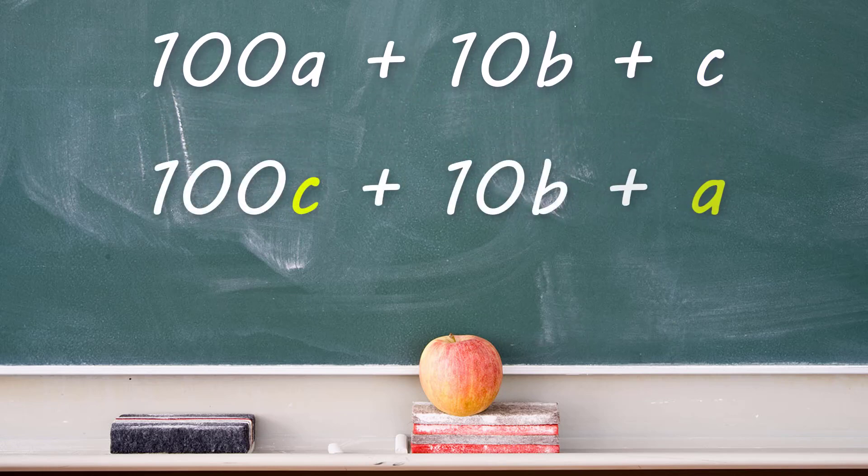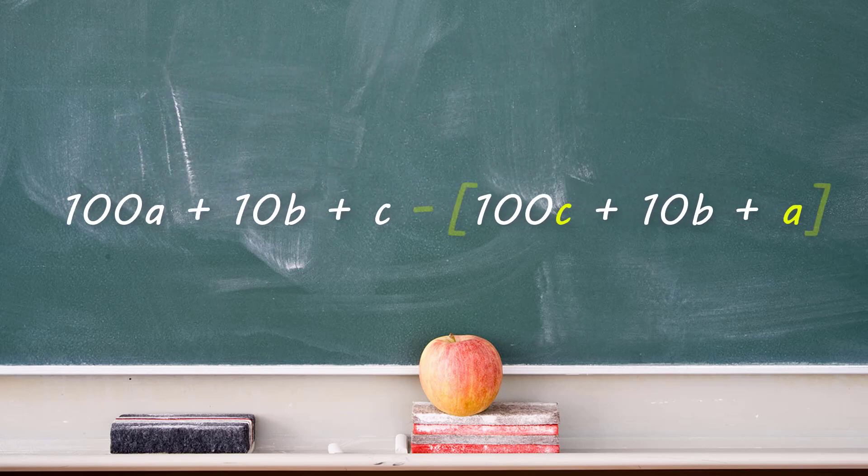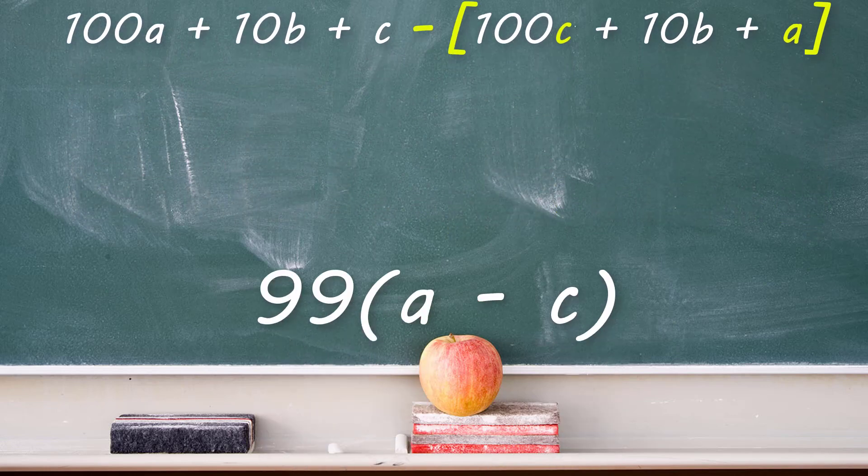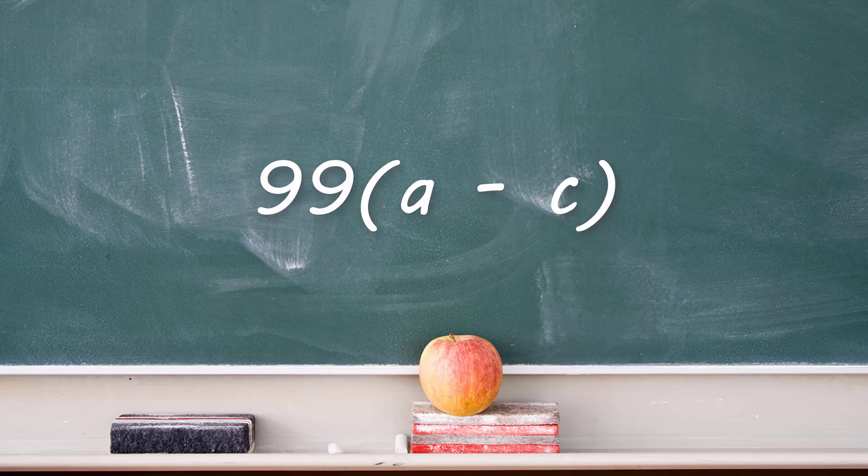The reverse version can be shown like this. Now here's why this is important. When you subtracted your number by its reverse, the final expression simplifies down to 99(A - C).